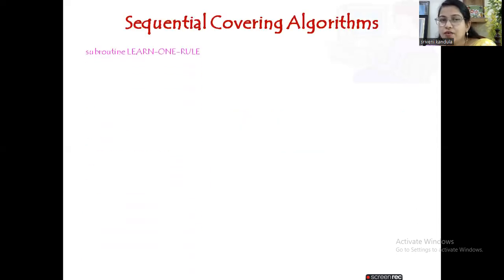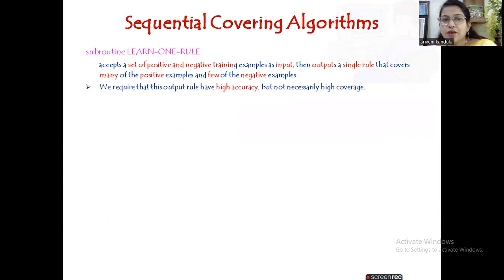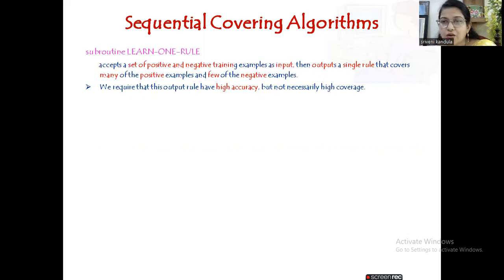The subroutine learn one rule accepts a set of positive and negative examples as input, and outputs a single rule that covers many of the positive examples and few of the negative examples. We require that this output has high accuracy, but it does not need to cover all the examples — redundant and irrelevant ones are eliminated, keeping only examples with high entropy value.